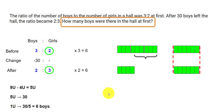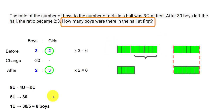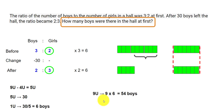The question asks how many boys were there in the hall at first. At first, the boys are represented by 9 of the new smaller units. Each unit equals 6, so 9 units equals 9 times 6, which is 54 boys.